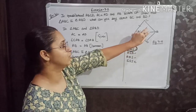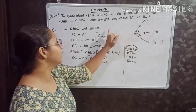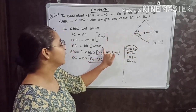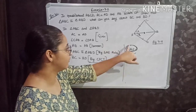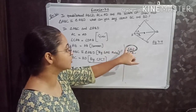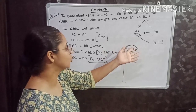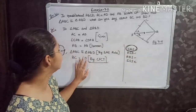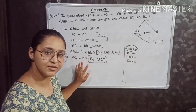So to summarize: first take the two triangles, write the given conditions, identify the common part, then see which of the four congruence rules can be applied most suitably, and then prove the result.